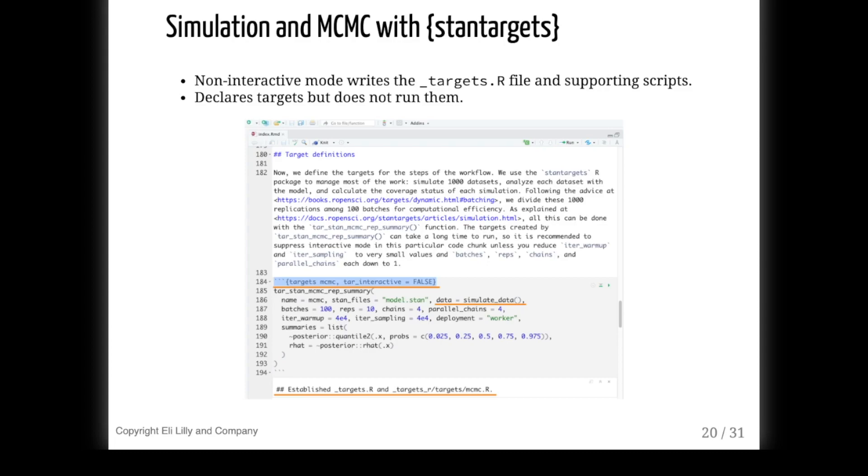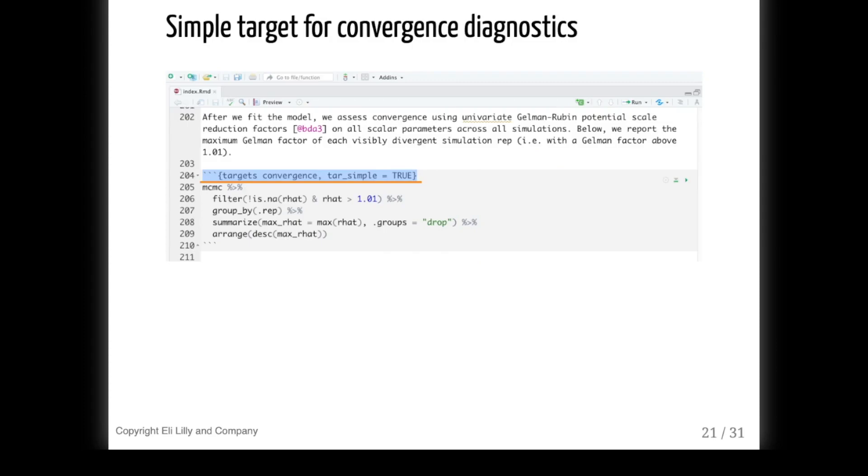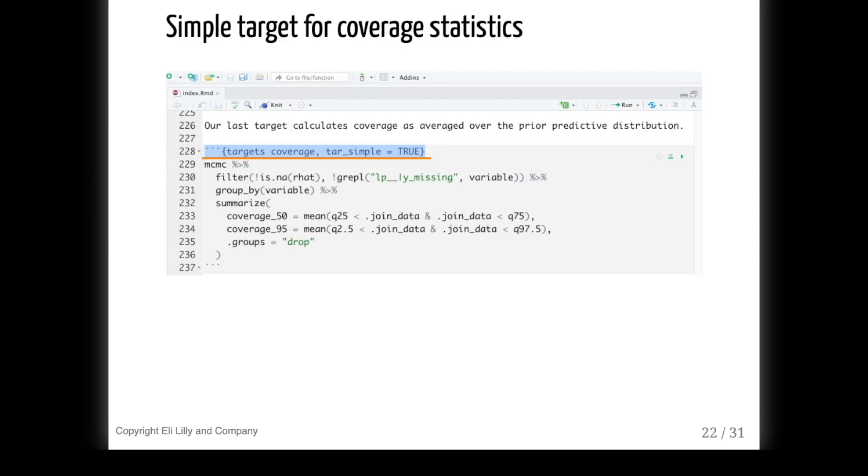In this particular chunk, we invoke a target factory called tarstan_mcmc_rep_summary to define the bulk of the work in the simulation study: draw prior predictive data, run the model, and compute summary statistics and convergence diagnostics. You don't need to worry about what R script file to put this in or how targets and functions are organized within scripts. That's all software engineering, but thanks to target markdown, all you need to focus on is the actual chunks inside the report. For even more smoothness, you can even turn arbitrary code chunks into targets with the tar_simple chunk option. Then the code chunk code becomes the command and the chunk label becomes the target name. This works as long as the code chunk acts like a pure function, meaning it returns a single value and does not cause any side effects. So here we have one target to summarize convergence diagnostics, and we have another target to calculate those coverage metrics for calibration. At this point, our entire pipeline is defined.